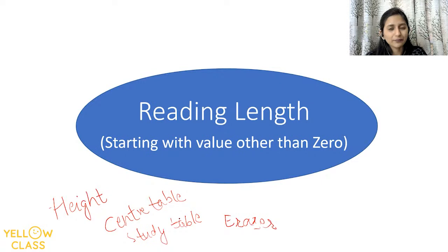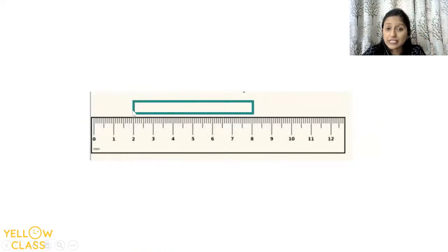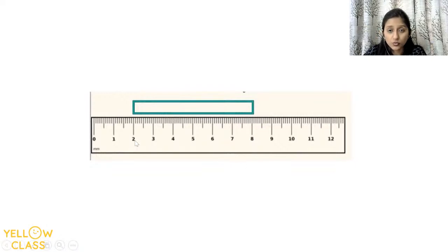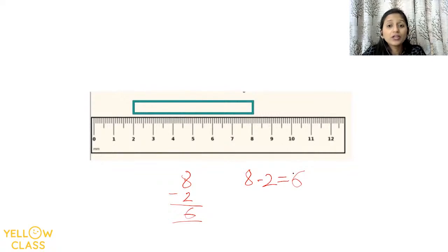Now let's see the second method — when we measure length but it doesn't start from zero. If this is a rectangle and I say tell me the length of the long side: the first point is 2 and the second point is 8. I subtract these numbers — 8 minus 2 is 6. So the length of the side of the rectangle is 6 centimeters.